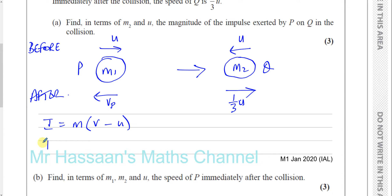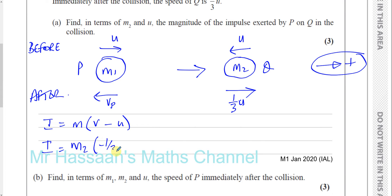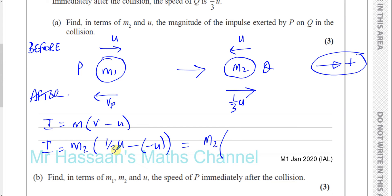The impulse equals mass times final velocity minus initial velocity. So the impulse is M2 times the final velocity. I'm going to take the rightward direction as positive. So the final speed, which is a third U, will be positive. And the initial speed was going in the negative direction, so it's minus negative U, giving M2 times a third U plus U. A third plus one is four over three, so M2 times four over three U, which gives four M2 U over three.